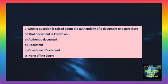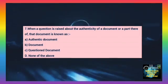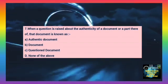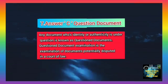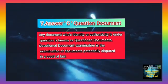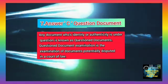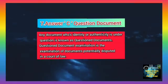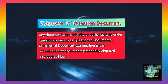Question number 7. When a question is raised about the authenticity of a document or a part thereof, the document is known as — Option A: Authentic document. Option B: Document. Option C: Question document. Option D: None of the above. The correct answer is C, question document. Any document whose identity or authenticity is under question is known as a question document. Question document examination is the examination of a document potentially disputed in a court of law.